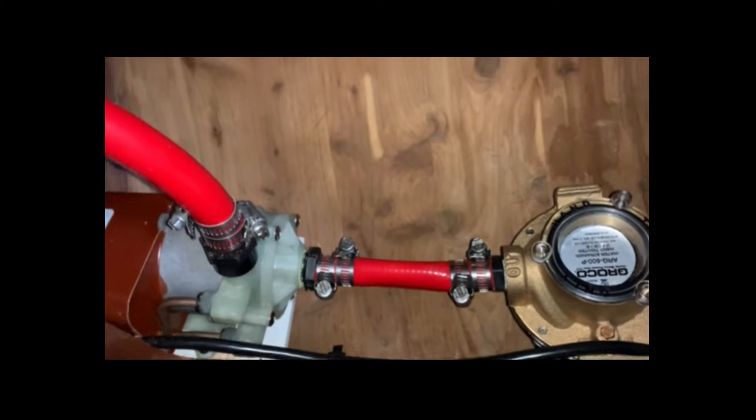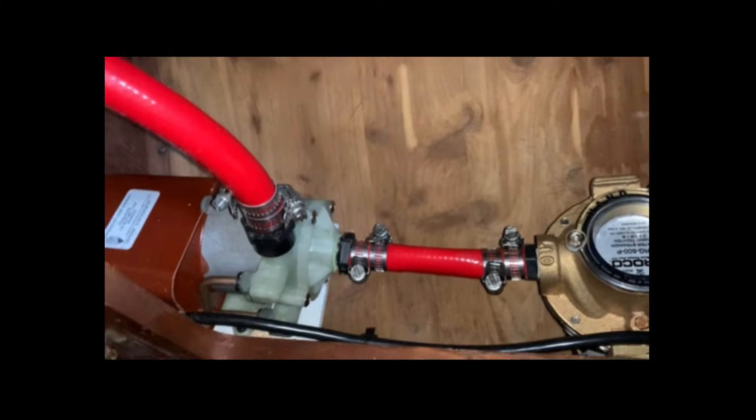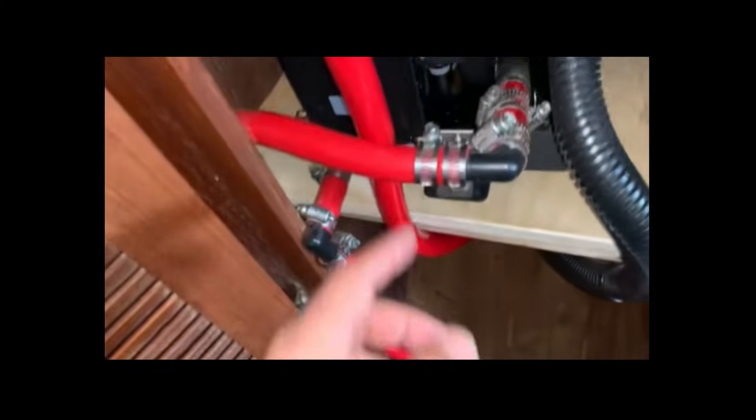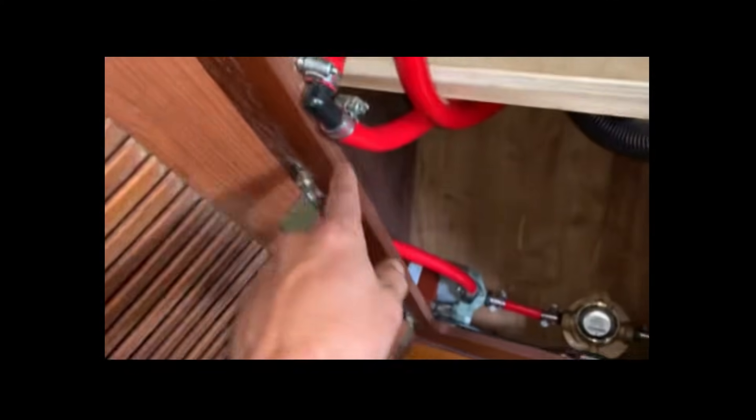But if you do have to prime a unit, we can show on a different vessel too that's maybe easier to understand. So this is the line that wraps all the way around to the top of the pump. You could take this line off - the easiest way to take it off is right here at the unit.